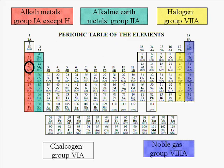Here's sodium — it's an alkali metal. Choice A is a true statement. We're looking for the false statement. Here's neon — it's a noble gas. Choice B is also a true statement. Here's calcium; it belongs to group 2A, it's an alkaline earth metal. Choice C is a true statement.